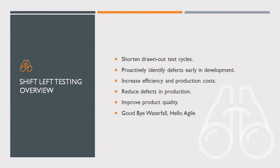Goodbye waterfall, hello agile. In traditional testing, a typical waterfall software development project would have testing occur immediately prior to release into production. When bugs or usability issues were found, the release would be delayed until they were fixed — testing became a bottleneck that seriously hindered the ability to deliver on time. Modern businesses applying the waterfall model have difficulty surviving; if they release a new version only twice a year, they lose customer relevance.